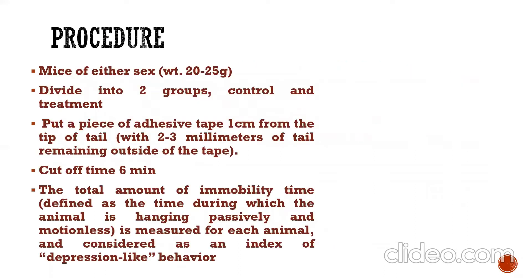Now, simply the procedure of this experiment is to take mice of either sex weighing about 20 to 25 grams, divided into two groups. One is the control and another is the treatment group, where the investigational drug should be administered to the mice.